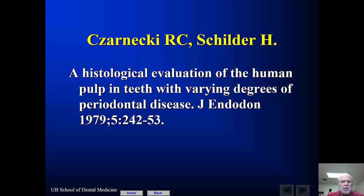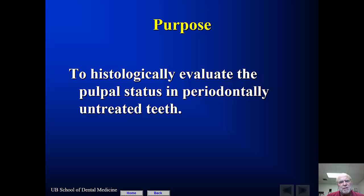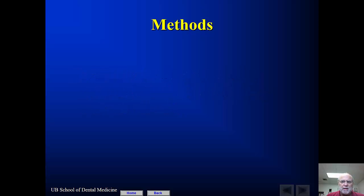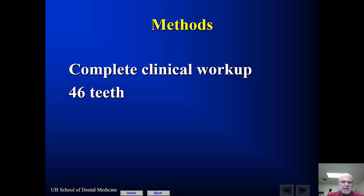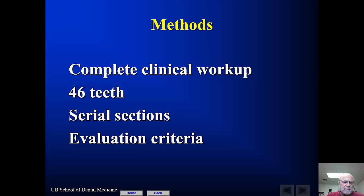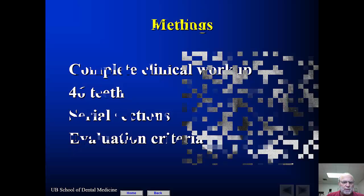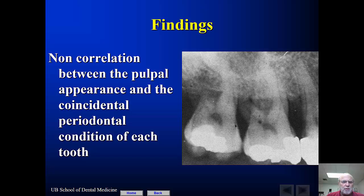In a key paper published by one of our faculty — a former faculty member, a dental school graduate of UB, and one of my mentors, Roger Zarnecki — they took teeth from several patients and took block sections of the teeth. All the teeth had different amounts of periodontal disease. The purpose was to look at the pulps of the teeth and evaluate inflammation in the pulp in the presence of periodontally involved but untreated periodontal disease. They did a complete clinical workup on 46 teeth, performed histology with serial sections of the whole tooth, and predetermined an evaluation criteria. The principal finding was that they found no correlation between the appearance of the pulp and the periodontal condition of the tooth.